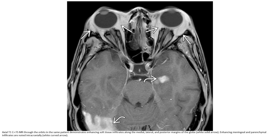The second case is Axial T1 C-plus MR, fat-saturated MR through the orbit in the same patient, demonstrating enhancement and infiltration along the medial, lateral, and posterior margin of the globe.